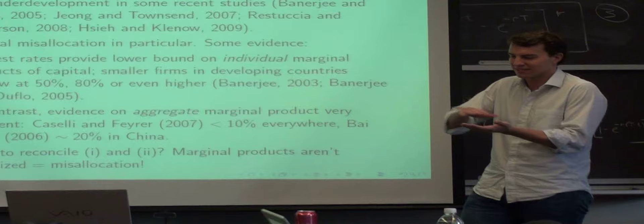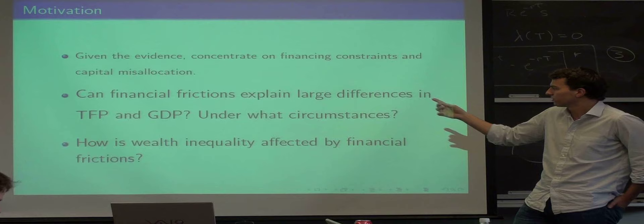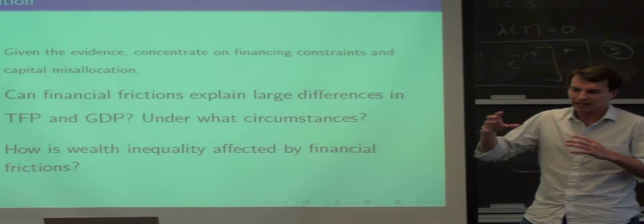The pretty obvious answer is that the aggregate, the average sort of conservative is very different from individual ones, so it just means that they can't be equalized. The big question from a macro development kind of view is, can these financial frictions and this capital misallocation explain large differences in GDP, first of all, and then also in total factor productivity?